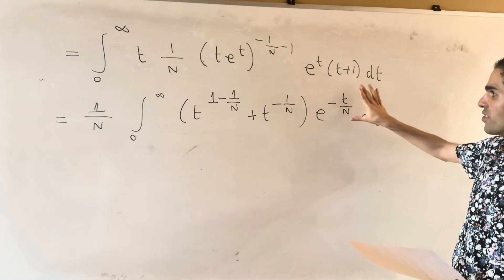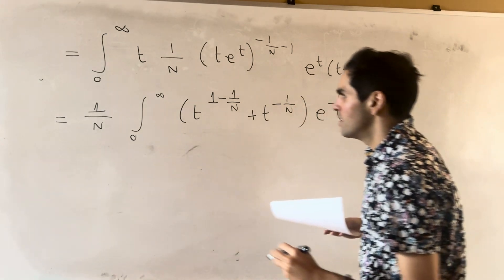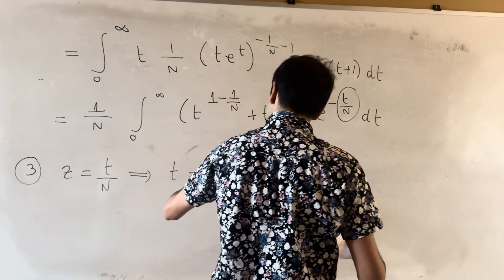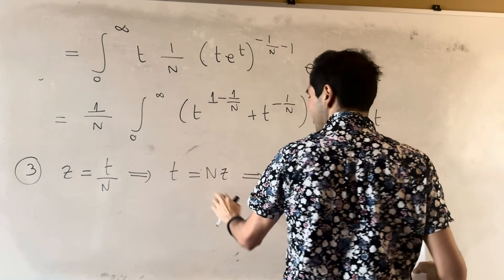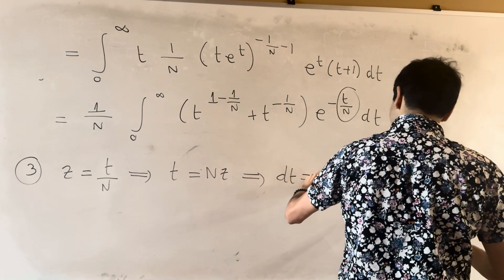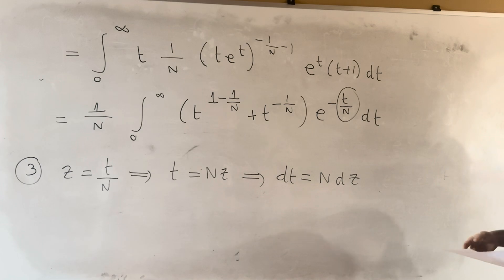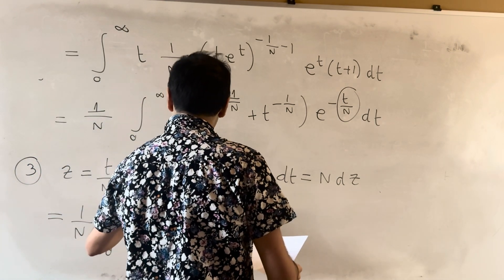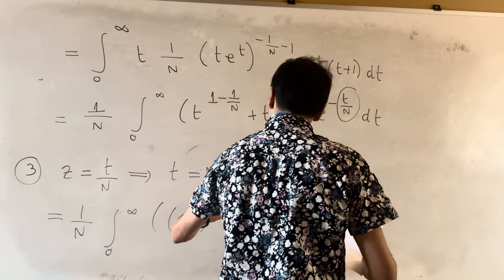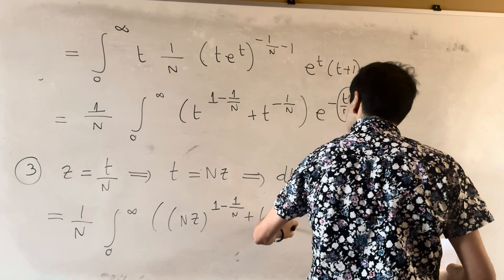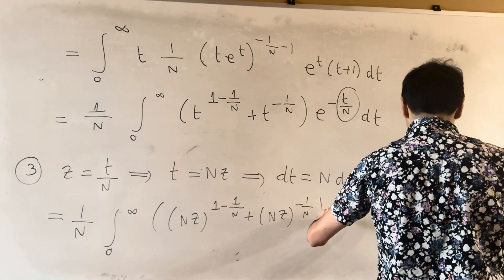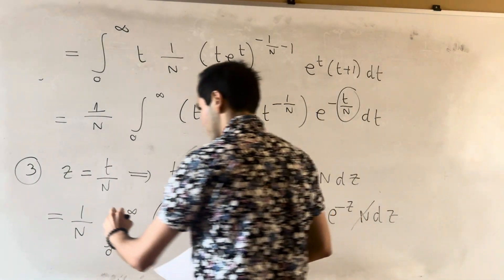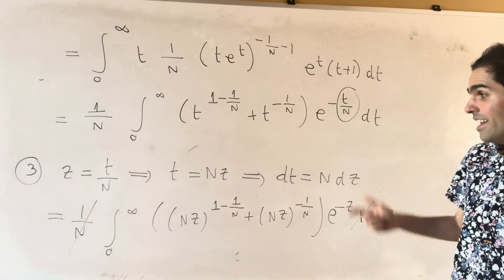This suggests our last substitution: z = t/n. So t = nz and dt = n dz. After substituting, we get (1/n) times the integral from zero to infinity of [nz]^(1 − 1/n) + [nz]^(−1/n), times e^(−z), times n dz. The n factors partially cancel.